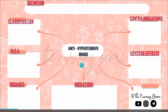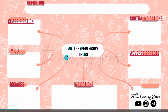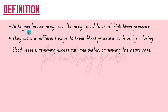By the end of this video, you will understand anti-hypertensive drugs in the following format: definition, classification, mechanism of action, dosages, indications, contraindications, and adverse effects. This is a clear explanation, so let's watch this video. First of all, the definition of anti-hypertensive drugs.